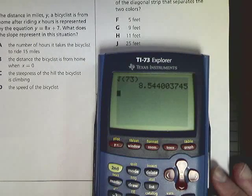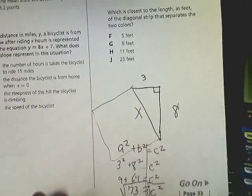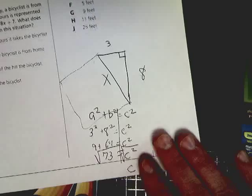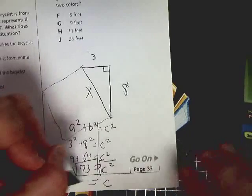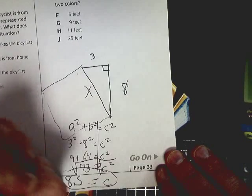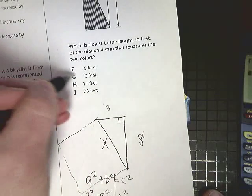Your calculator may work differently. 8.5. So it asked me which is closest to the length. The closest to this 8.5—I don't know why I didn't feel like I needed to write that down—the thing closest to 8.5 is 9.